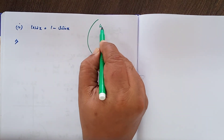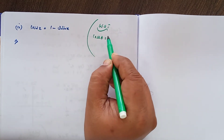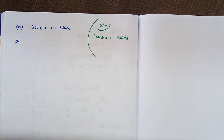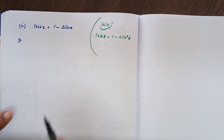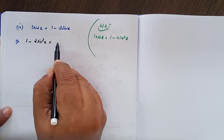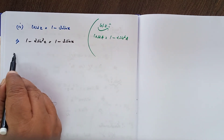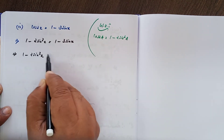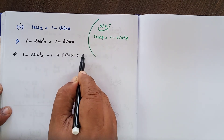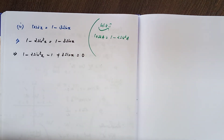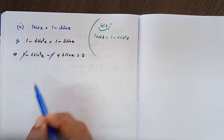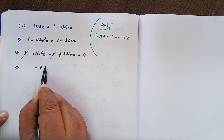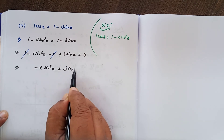Subdivision 4: cos2x equals 1 minus 3sinx. We apply the formula cos2a equals 1 minus 2sin²a, since we have sin on the right-hand side. Substituting: 1 minus 2sin²x equals 1 minus 3sinx. The 1s cancel, bringing terms to the left: minus 2sin²x plus 3sinx equals 0.